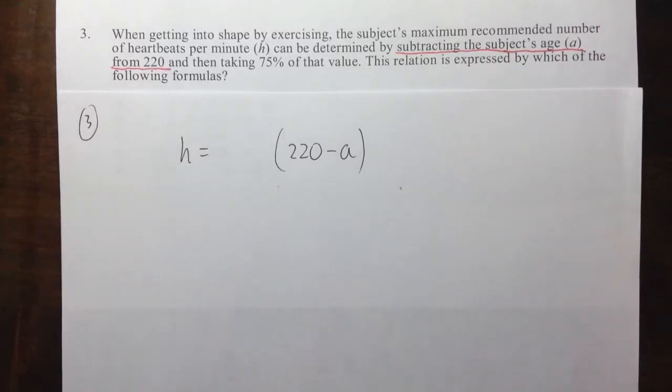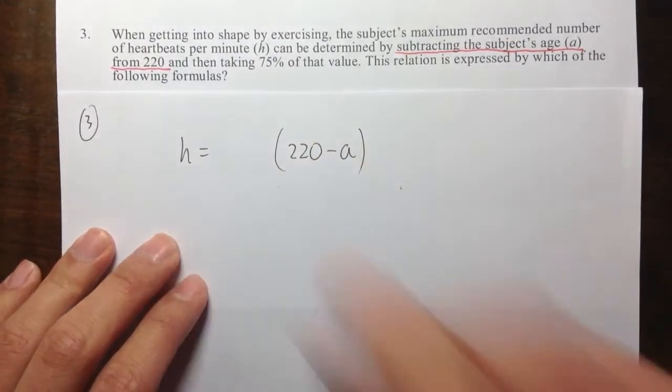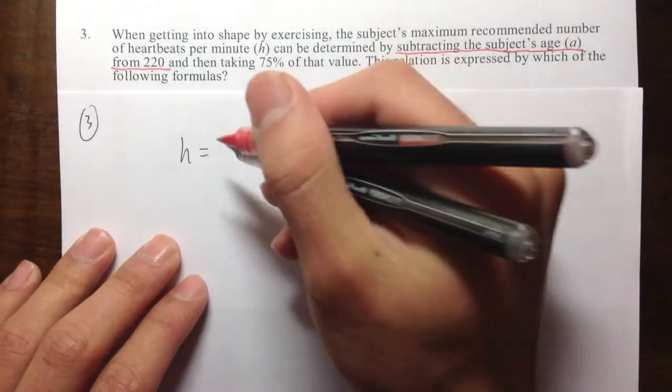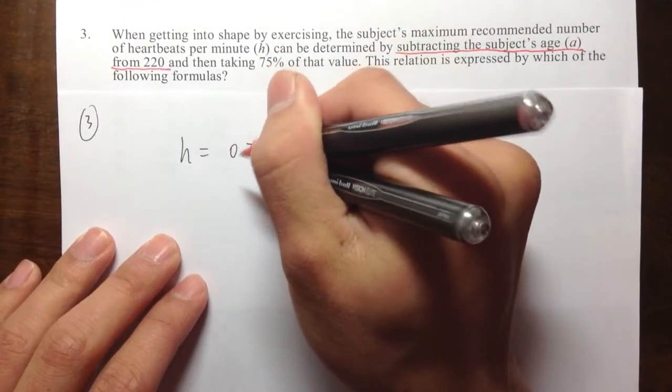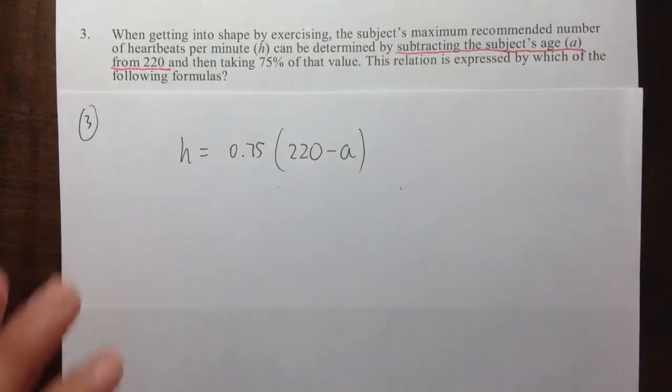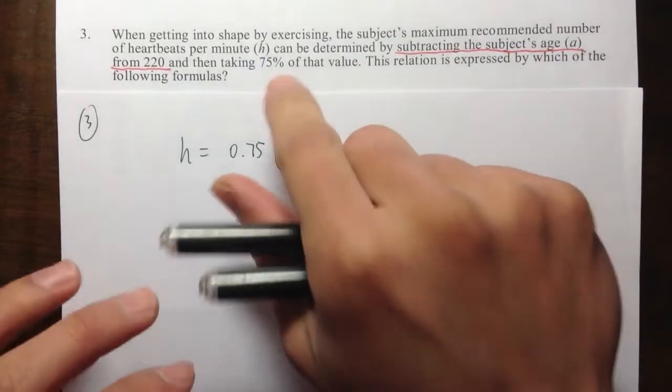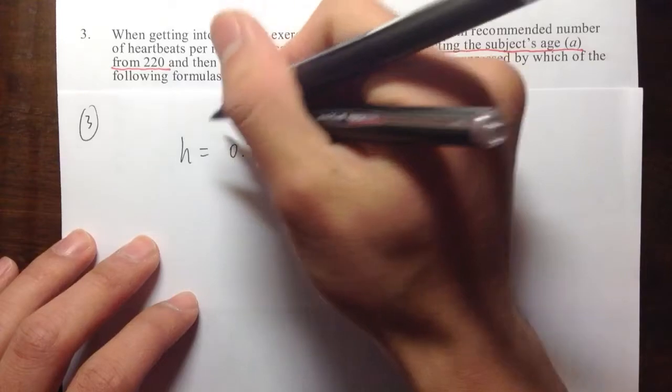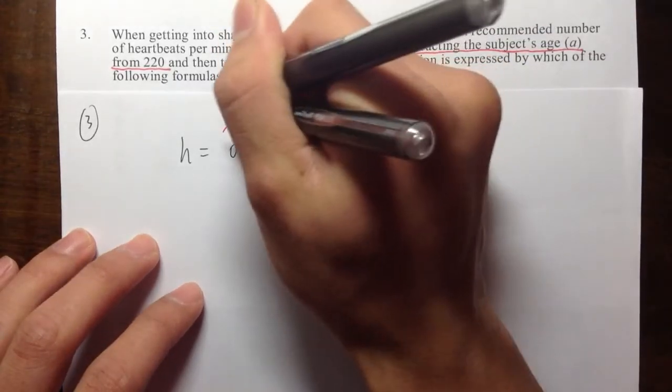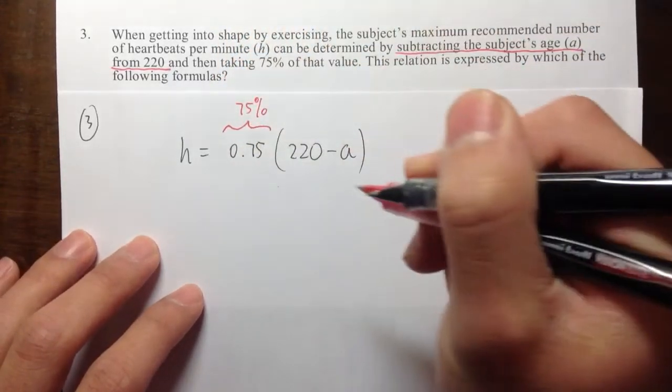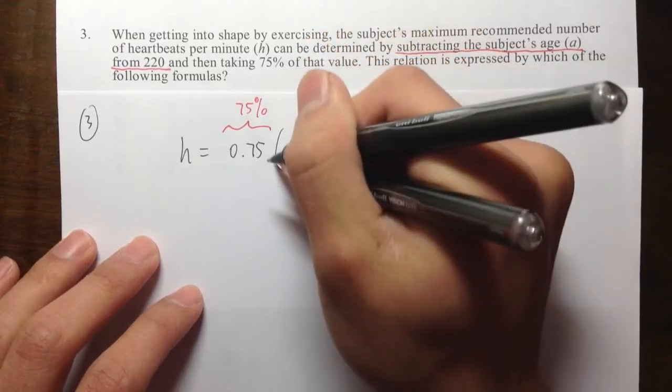And then I need to multiply this number by 75%. And 75% is 0.75. 0.75. So let me make a note right here. This right here is 75% of means we multiply.